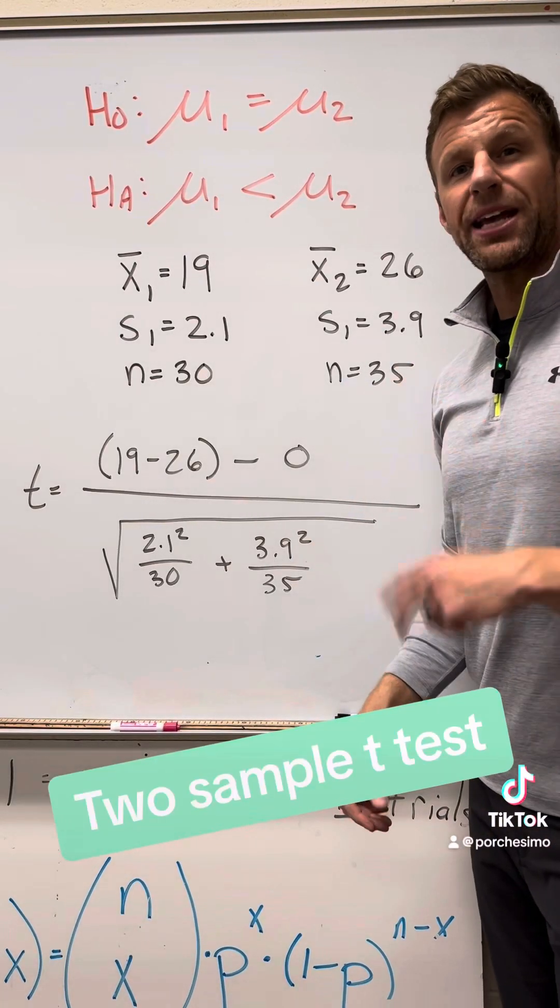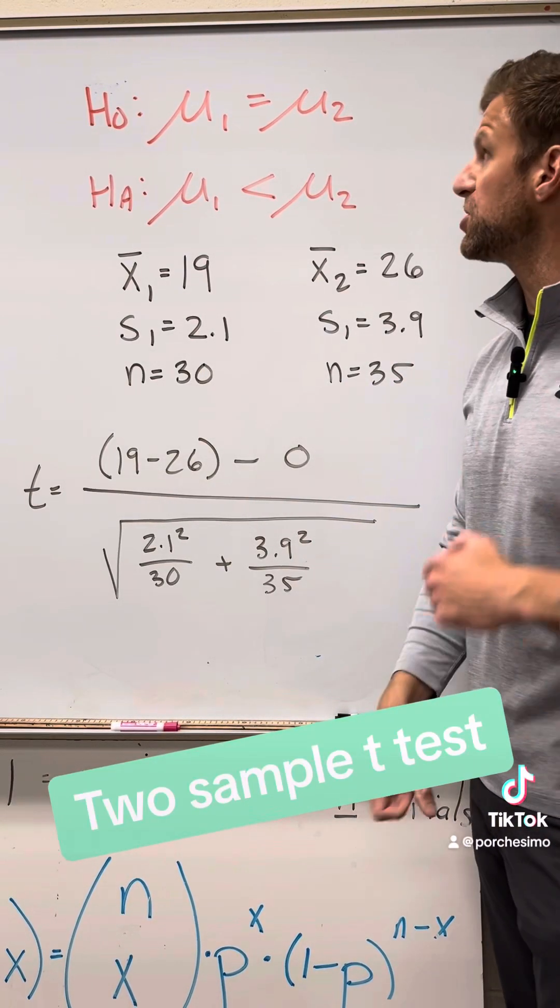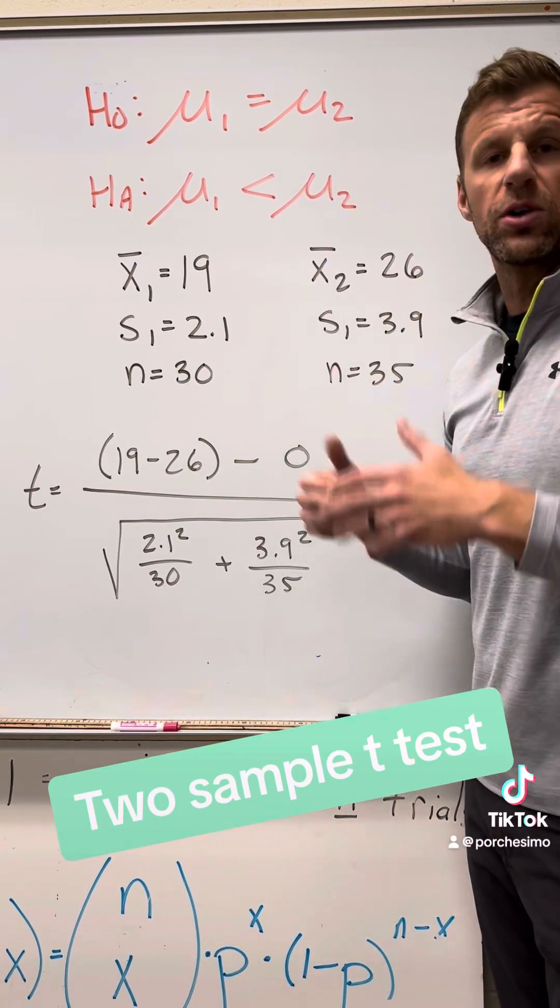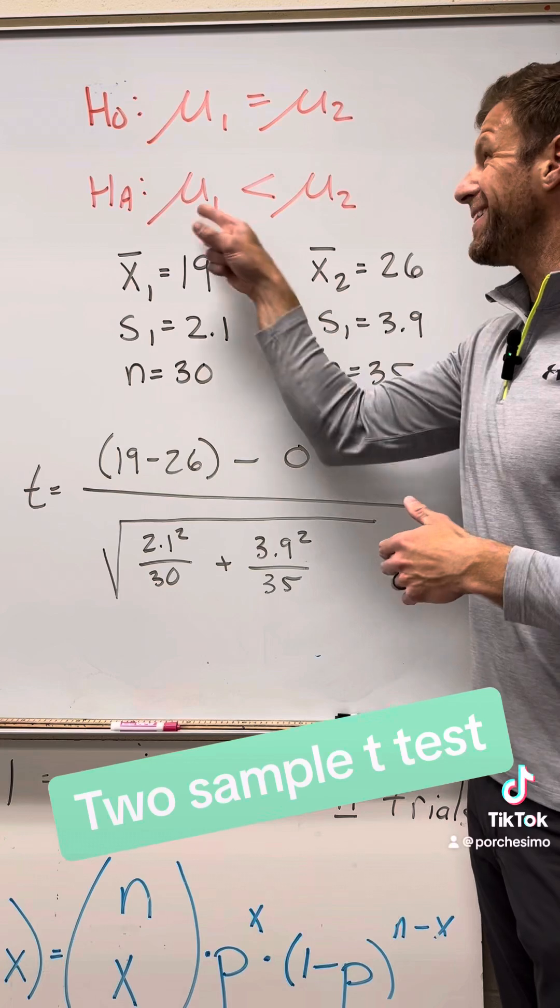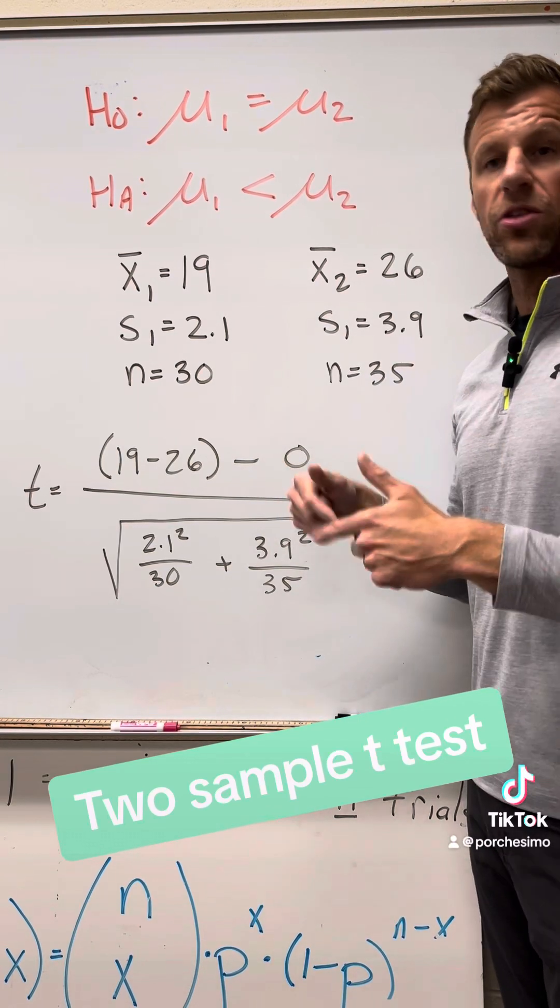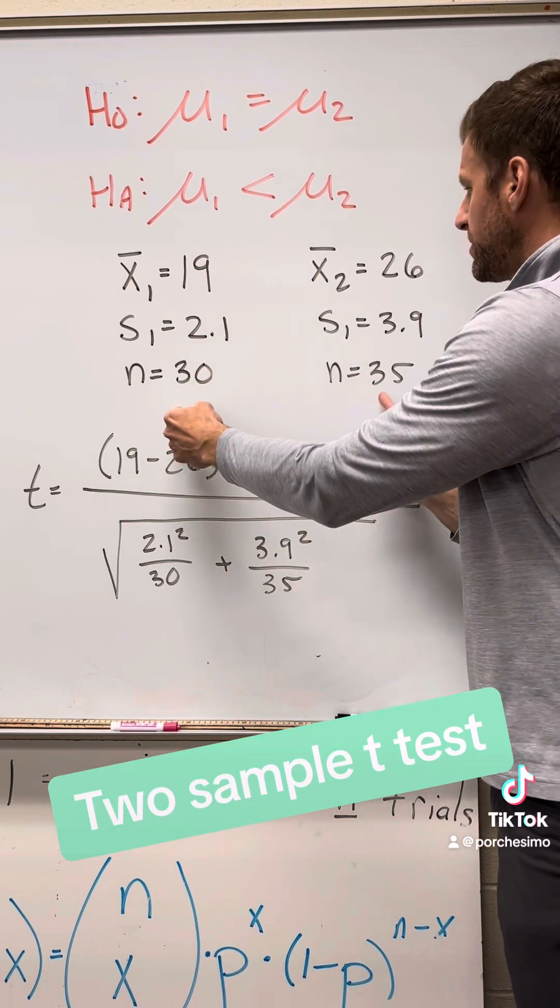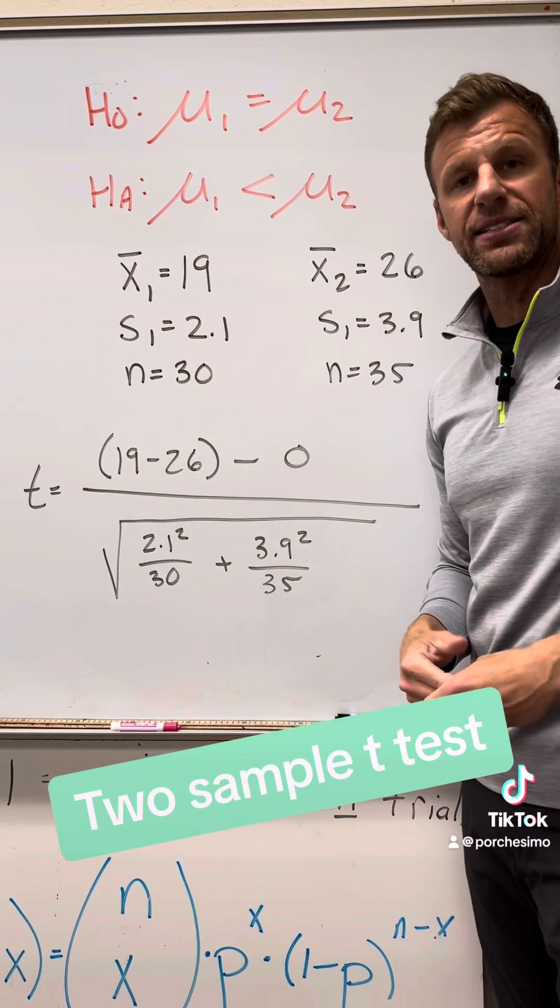And finally, here is a two sample t test for the difference between population means. The null is that the two population means are exactly the same. There's no difference whatsoever. And my alternative is that I think the first population mean is lower than the second population mean. Now here is the data I collected from my two samples, sample one, sample two, and here comes my test statistic.